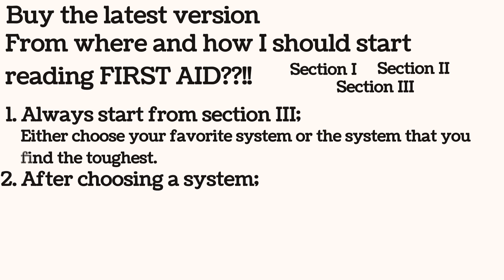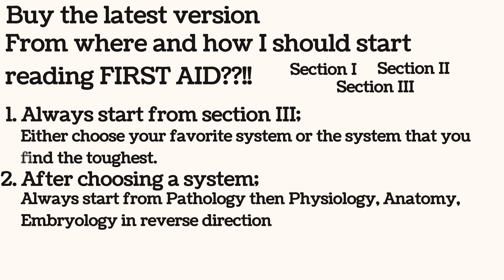So let's start the video. First of all, always buy the latest version. After buying the latest version you will open your First Aid and there are three sections: the first section is the guide to efficient exam preparation; the second section contains high-yield general principles including biochemistry, immunology, microbiology, pathology, pharmacology, and public health sciences; and the third section contains all the organ systems.